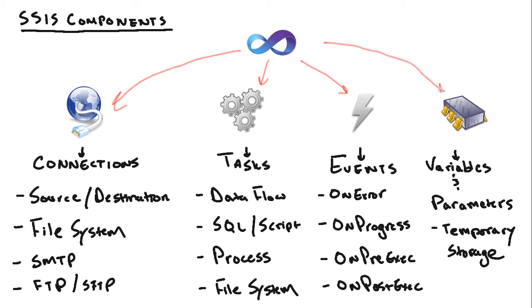We also have variables and parameters, which are just temporary storage areas we can use. One popular usage for variables is storing things like connection strings and directory locations in a configuration file. That way you can change these things while your package is deployed without having to edit and redeploy your package. Anytime you want to switch from a development environment to a production environment, you can do it by changing the configuration file — when the packages load they read from it and store data inside of variables, which we then use inside the package.